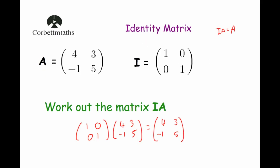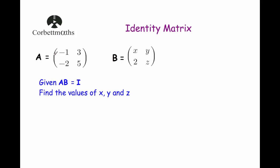Let's have a look at a question now. A is equal to the matrix [[-1, 3], [-2, 5]], and B is equal to the 2 by 2 matrix [[x, y], [2, z]]. The question says: given A times B equals the identity matrix, work out the values of x, y, and z. We know that multiplying these two matrices gives the identity matrix, but with this algebra we're going to have to multiply them out. So let's find out what the matrix AB equals.